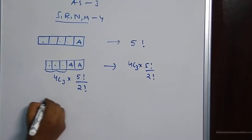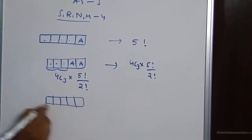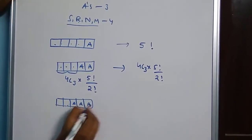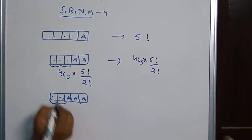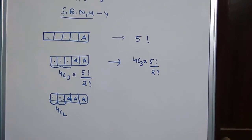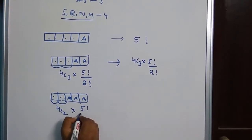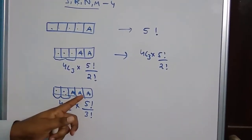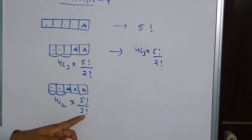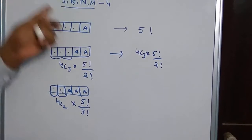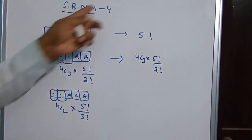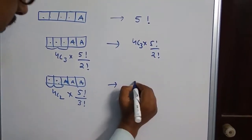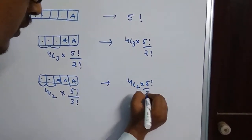Next combination: 3 A's are fixed. The remaining 2 places are filled by selecting 2 of the 4 distinct letters in 4C2 ways. These 5 letters including 3 A's are arranged in 5 factorial by 3 factorial ways. So the count for this case is 4C2 into 5 factorial by 3 factorial.